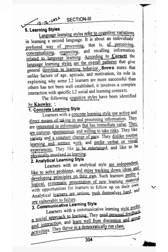These are all cognitive styles. Cognition means to understand something in one's own way. There are three to four major types: concrete learning style, analytic learning style, communicative learning style, and authority oriented style.